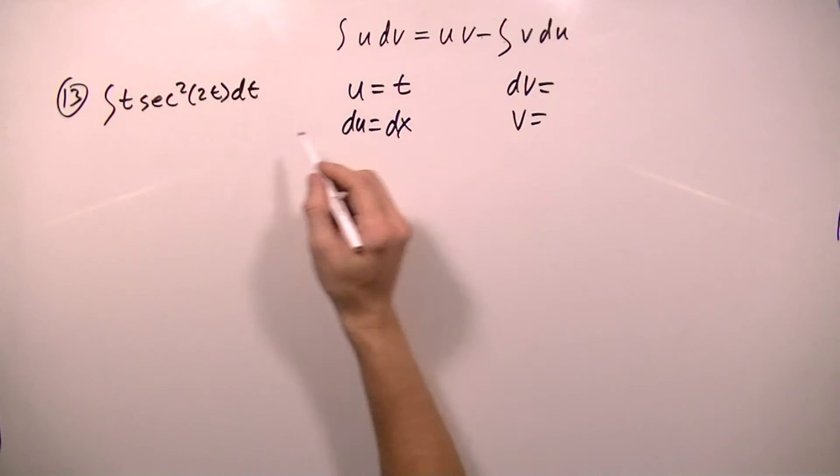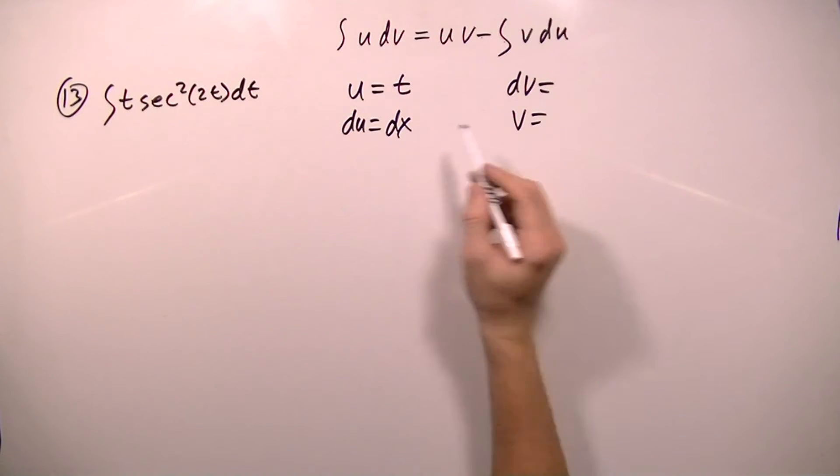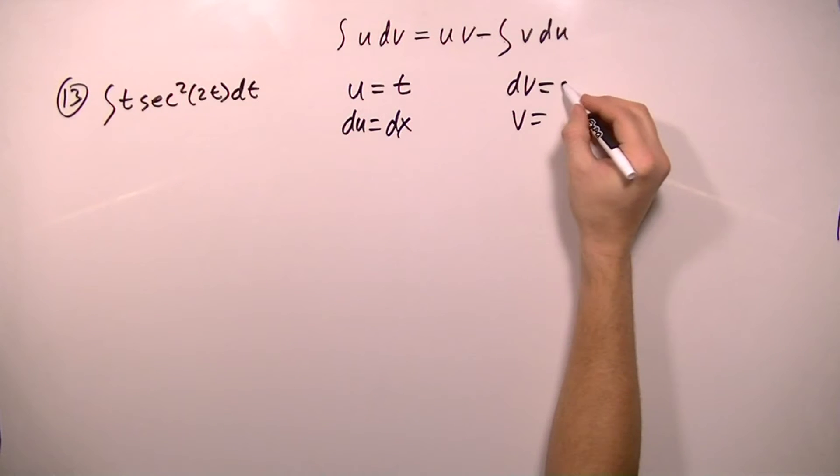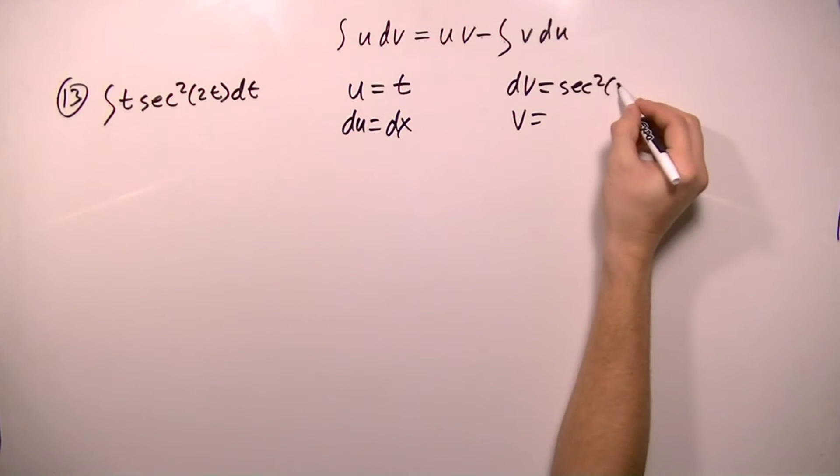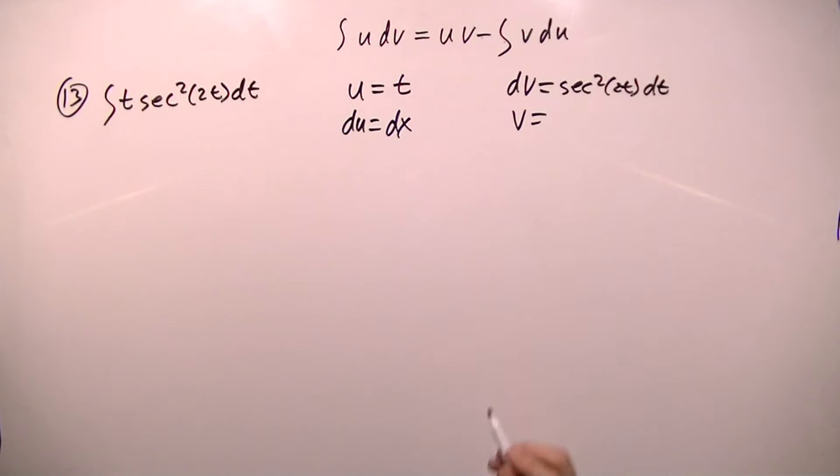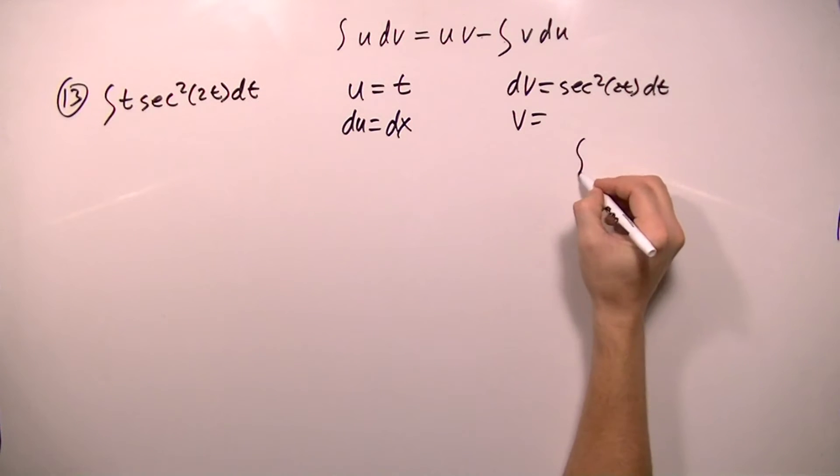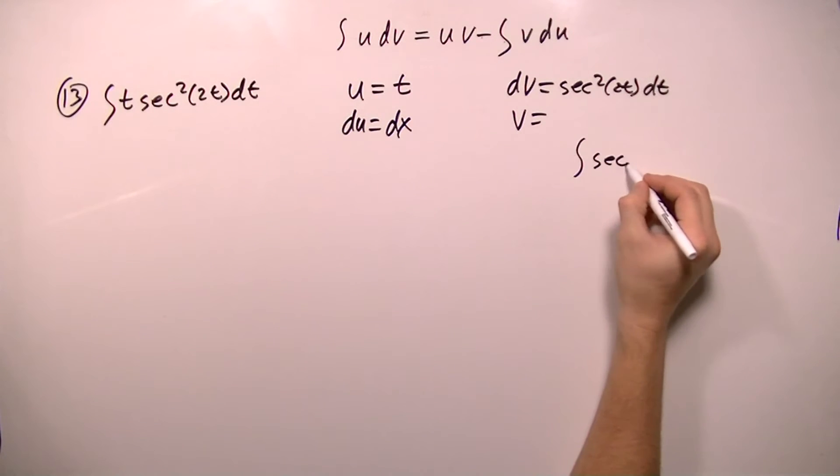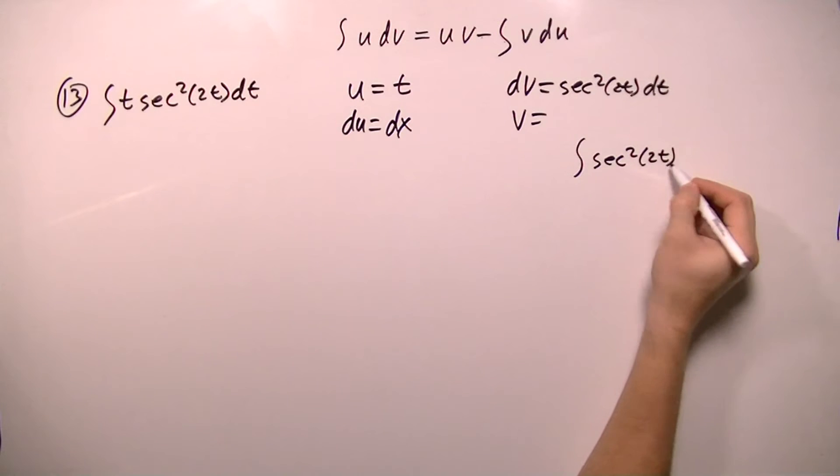So dv will have to be what's left, and that's secant squared 2t dt. So secant squared 2t dt. And to find v, I'm going to have to take the integral of dv. So I need to find the integral of secant squared 2t dt.